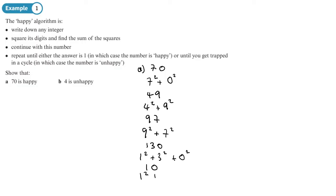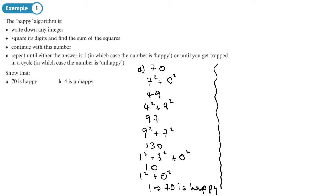Continuing: one squared plus zero squared equals one. The algorithm says repeat until the answer is one — which is what we've got — or we get trapped in a cycle. We don't get trapped in a cycle, so we can conclude that 70 is happy.